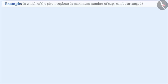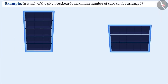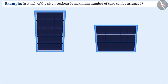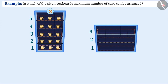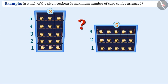Next example: there are two cupboards. There are five rows in the first cupboard and in each row only three cups can be arranged. In the second cupboard, there are three rows and in each row only five cups can be arranged. Can you tell which cupboard will have the maximum number of cups?